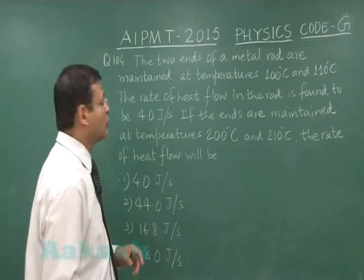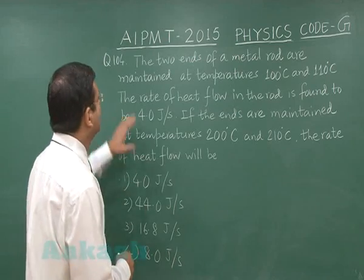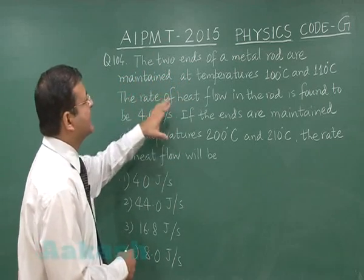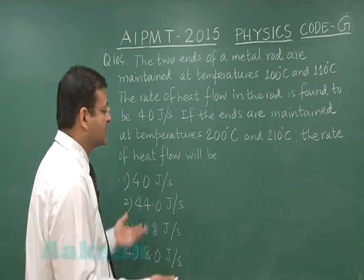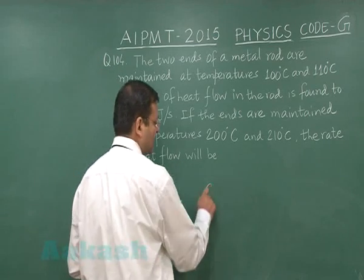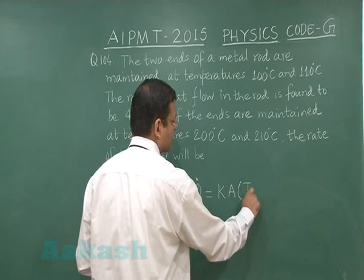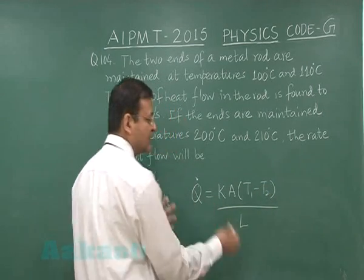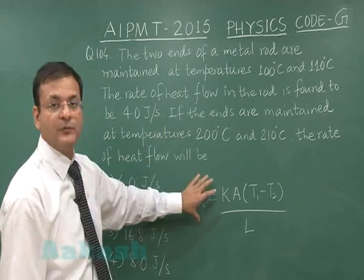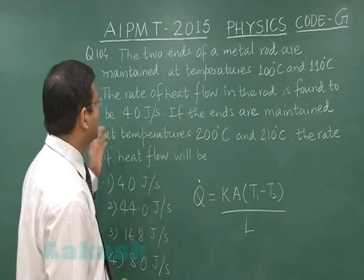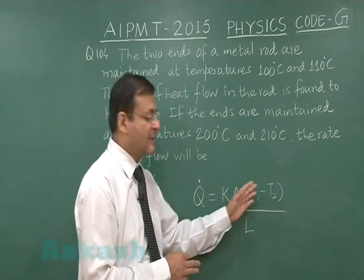Question 104 is based on heat transfer — specifically thermal conduction, and is a straightforward formula-based question. Two ends of a metal rod are maintained at 100°C and 110°C. The rate of heat flow is given as 4 joules per second. Using the standard equation: heat flow rate Q̇ = kA·ΔT/L.